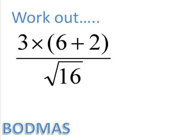So we have a quick look at BODMAS. The first bit you're going to see there is there's something in brackets. So this is the part we do first. 6 plus 2 gives us 8. And this leaves us with the question 3 times 8 over the square root of 16.